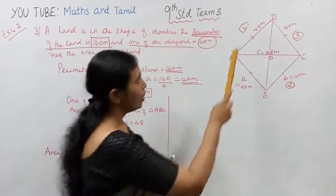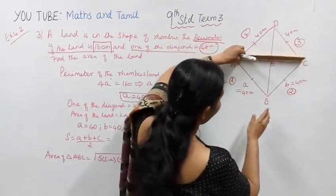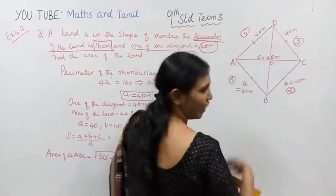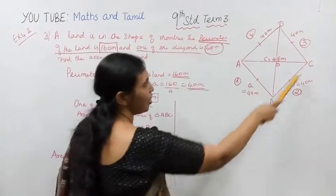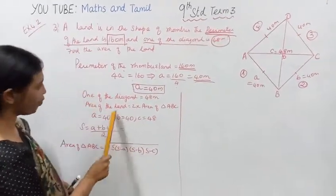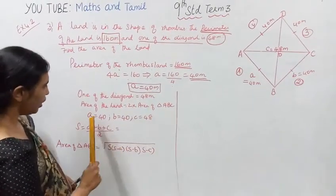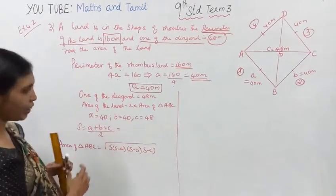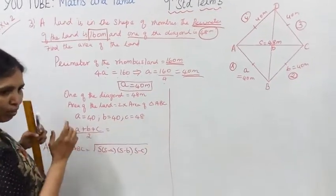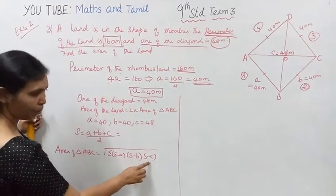Area of the land equals 2 into the area of triangle ABC, where a equals 40, b equals 40, c equals 48. First, using Heron's formula. Heron's formula: root of s into s minus a, s minus b, s minus c.